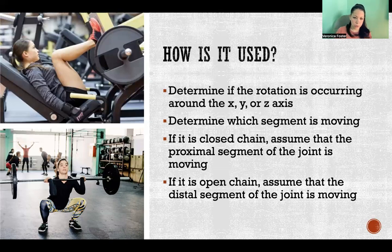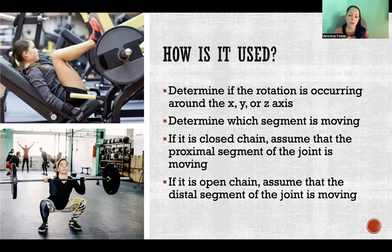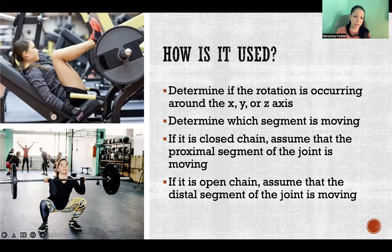For example, if we look at the top picture with the hip sled or leg press, that's open chain — the feet are freely moving, pushing out and back in again. So in that example, it would be the distal segment of each of those joints that's moving. At the ankle, that means the foot is moving. At the knee, that means the shin is moving. At the hip, it means the femur is what is moving — the distal segment between the two that make up each joint.